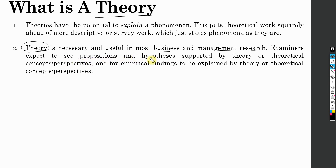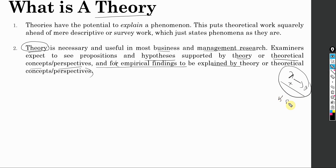Examiners expect to see propositions and hypotheses supported by theory or theoretical concepts, perspectives, and for empirical findings to be explained by the theory. This is part of the discussion. If you've got your results — say X influences Y with a positive impact — is this particular positive relationship supported by any particular theory, and if so, why? Theory is not just about proposing hypotheses; it's about supporting and explaining your empirical findings as well.